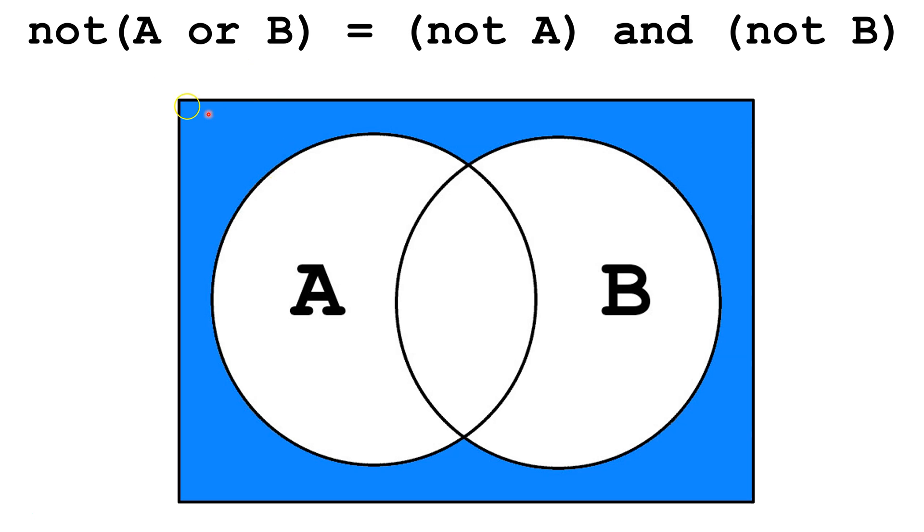Let's look at the first law. Not A or B. A or B would be anything in these two circles. So Not A or B would be anything outside of these two circles.